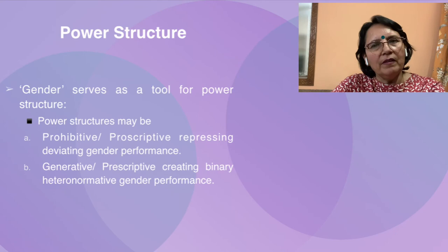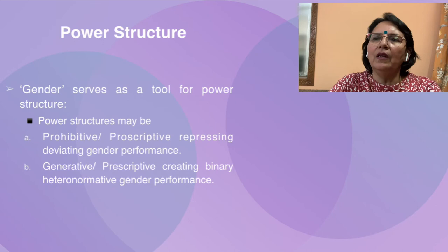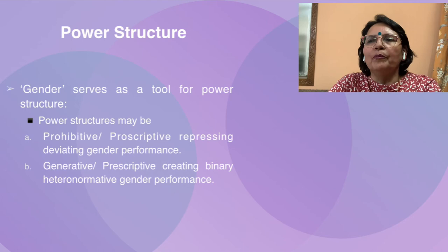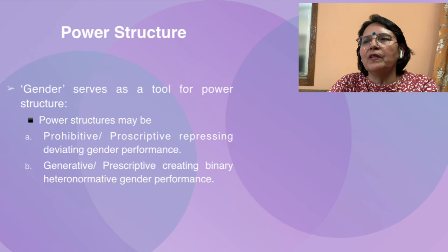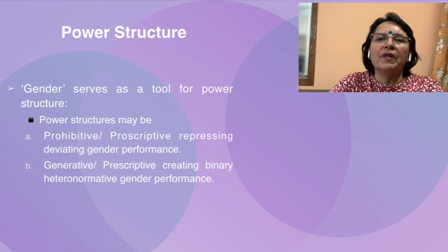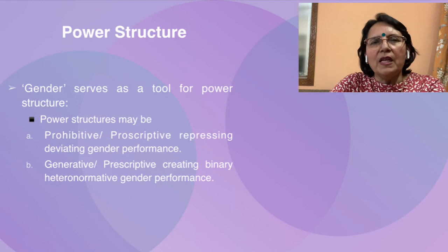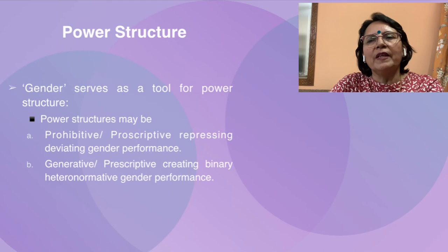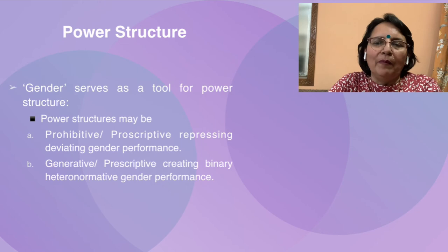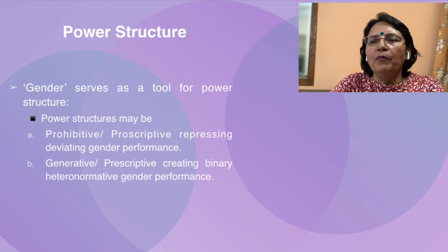Power is exercised within discourses, deciding how to define and organize both our world and ourselves in terms of subjectivity and our societal worlds. Power structures may be prohibitive or prescriptive — repressing or deviating gender performance — or they can be generative, creating binary heteronormative gender performances. Rules and categories lead discourses, and power within discursive fields like the family or the law contains varying degrees of power, offering structuring modes of subjectivity.